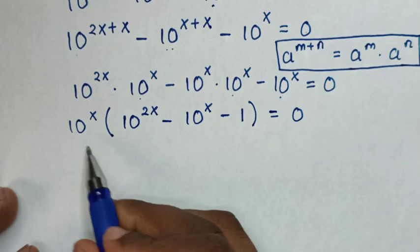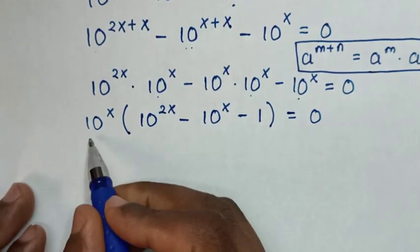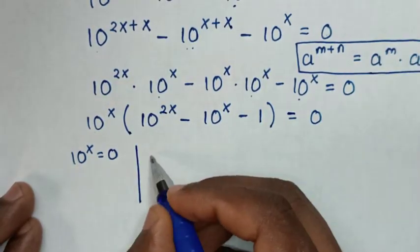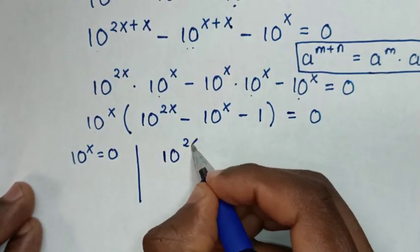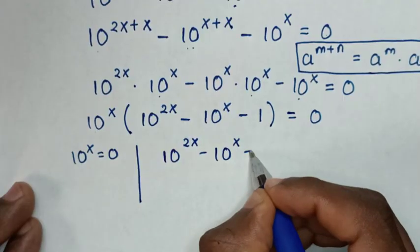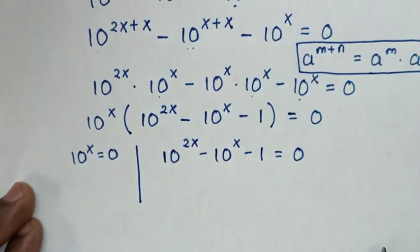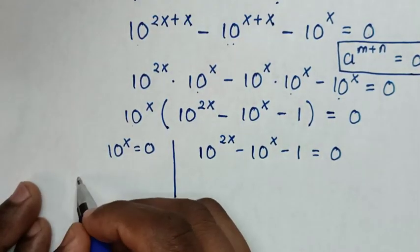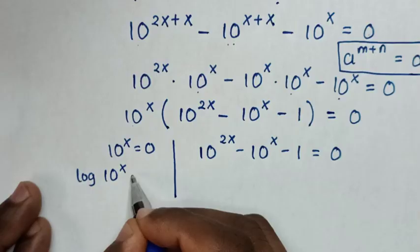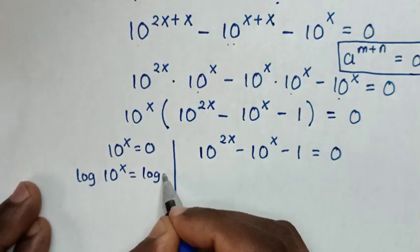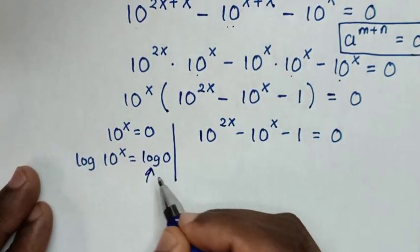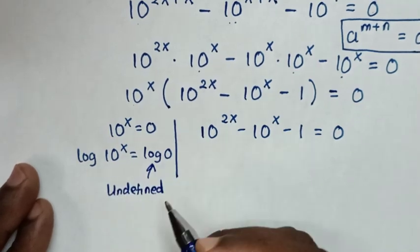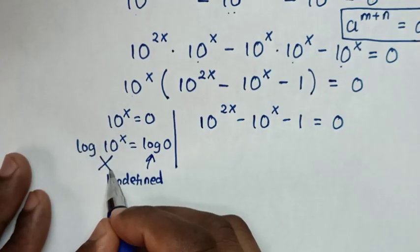From here we have two solutions. The first solution is 10 to the power of x equals 0, and the second solution is 10 to the power of 2x minus 10 to the power of x minus 1 equals 0. Applying log to both sides of the first solution gives log(10^x) = log(0), but log of 0 is undefined, so this solution is not possible and we reject it.